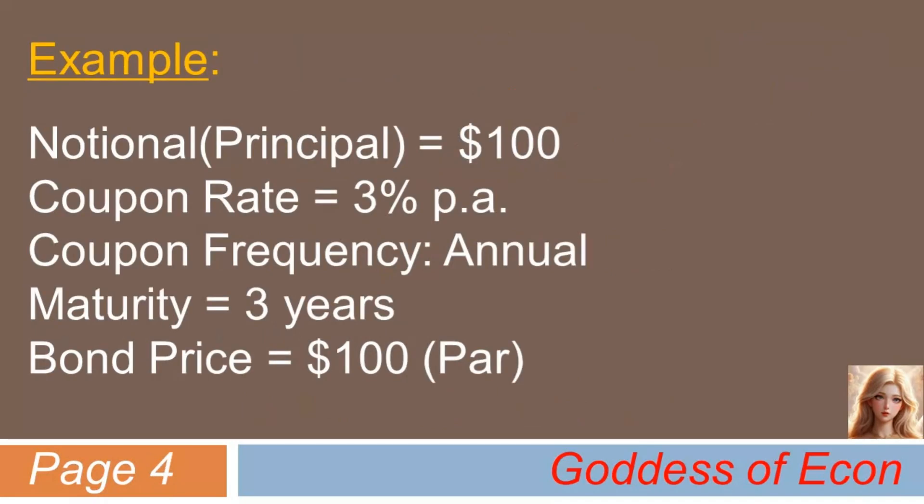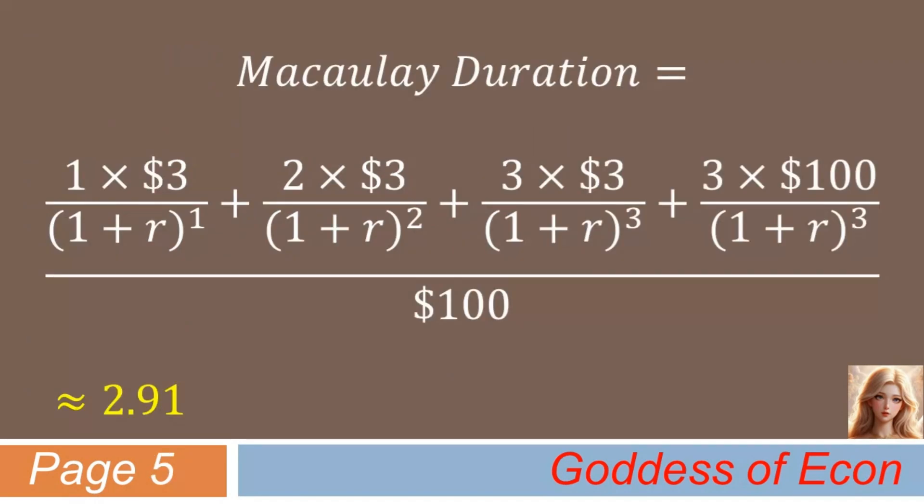Next, let's examine how different modified duration is from Macaulay duration, or how close they are to each other, through some examples. Okay, here's a 3-year bond with coupon rate of 3% per annum, with annual coupon frequency. Let's further suppose that the bond is priced at par. In my previous lecture on Macaulay duration, I have shown you that the Macaulay duration of this bond is about 2.91, which is very close to the bond maturity of 3 years. What do you think the modified duration of the same bond is? Well, Goddess's own calculation shows that it's 2.83, slightly lower than its cousin, but still quite close.